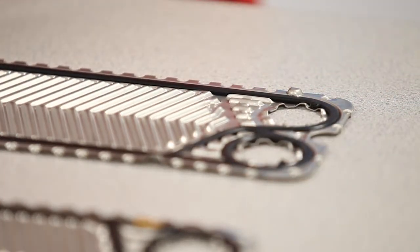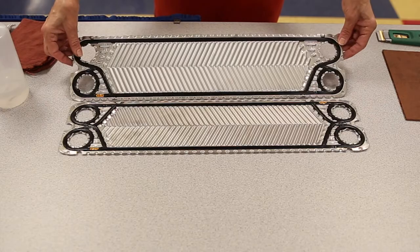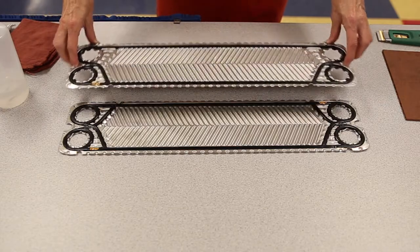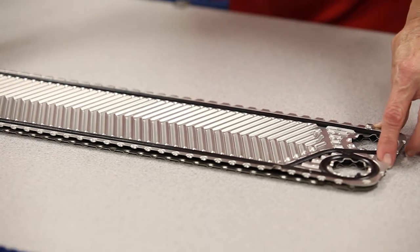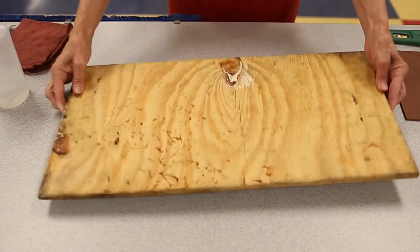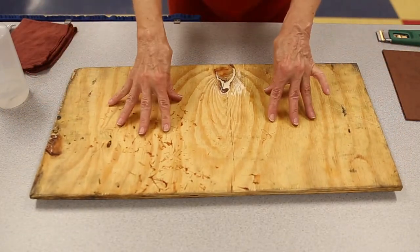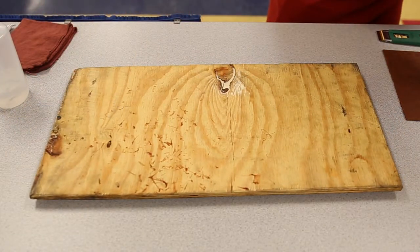After gluing the gaskets onto the plate, stack the plate onto a previously glued plate, alternating the plates left and right. Place a flat object such as plywood on top of the plates. Finally, place a weight on top to compress the gaskets into the track and ensure good adhesion.